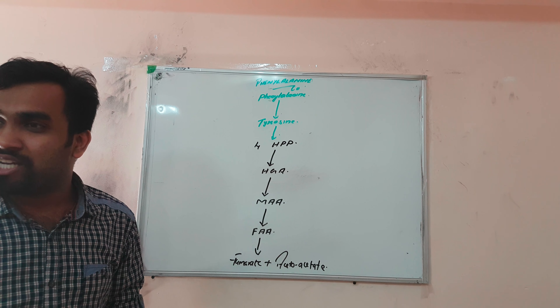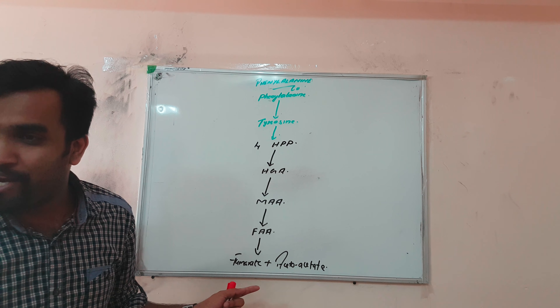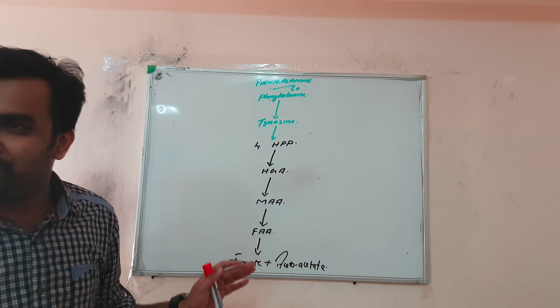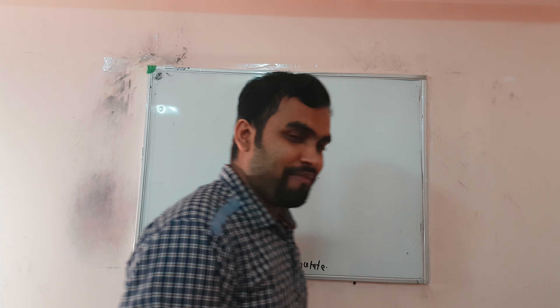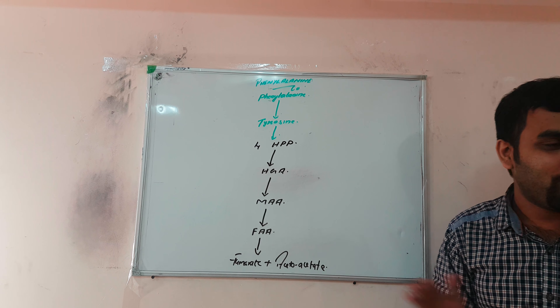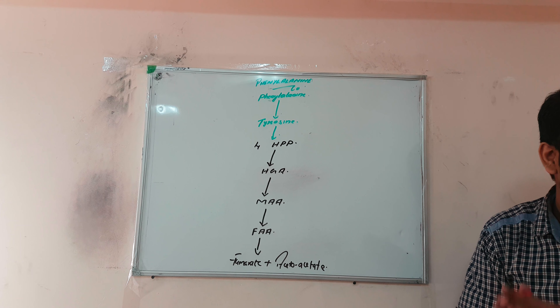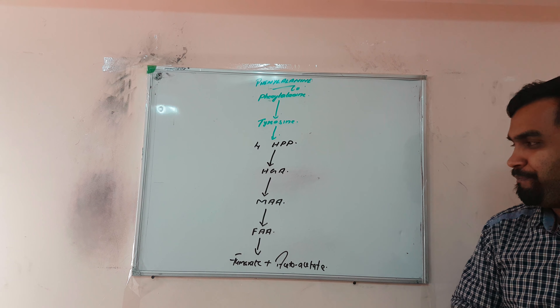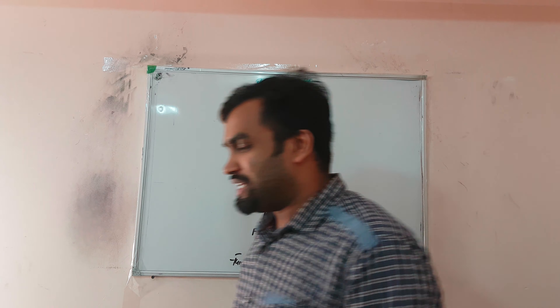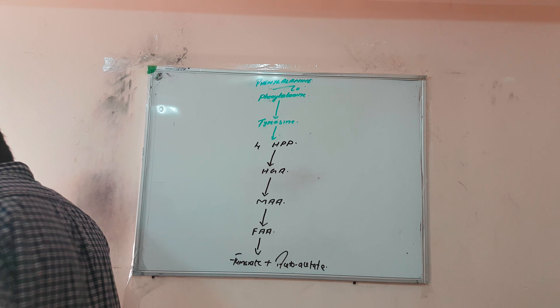When the father comes, you hide under your bed and your friends run away — that happens everywhere in the world. So the mnemonic is: party, dance (gana), mom (MAA), father (FAA), then splitter (fumarate + acetoacetate). Remember it like this and it will be very easy.